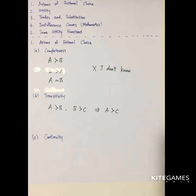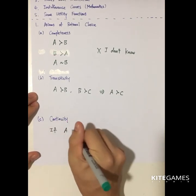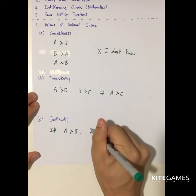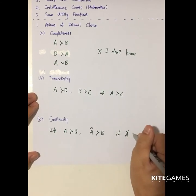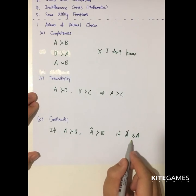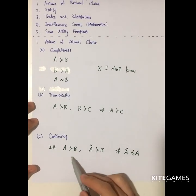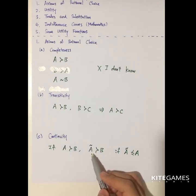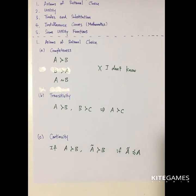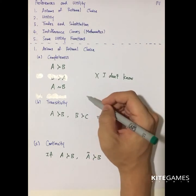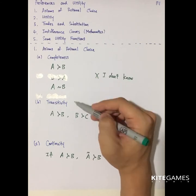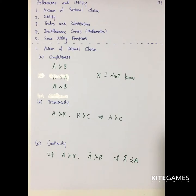Finally is continuity. Continuity means that if A is better than B, then another bundle A-tilde, which is only slightly worse than A, is also better than B. In other words, A minus a tiny piece of something is still better than B. This is a technical condition to ensure we can use mathematical models. Some economists treat only the first two — completeness and transitivity — as the axioms of rational choice. If someone satisfies both, they are considered rational in economics.